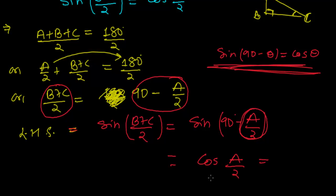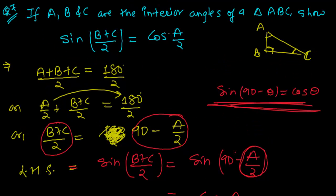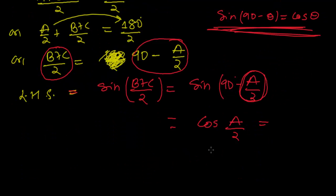And what do we got? We got the right side. The right hand side is cos A/2. So this is our right hand side. Like this we proved it. Now it is proved.